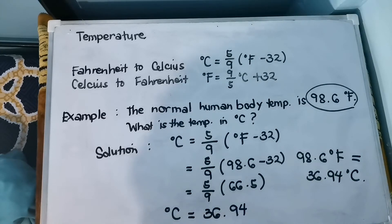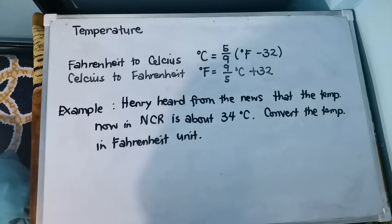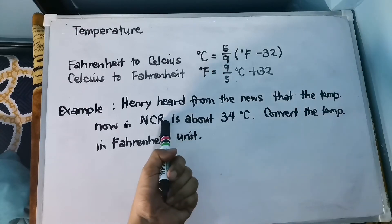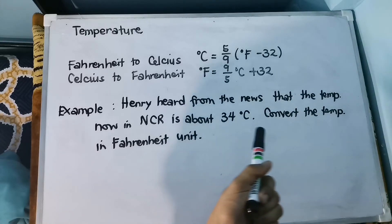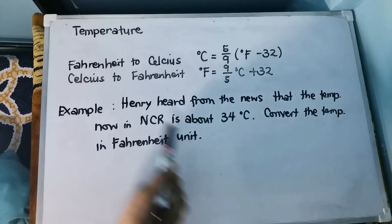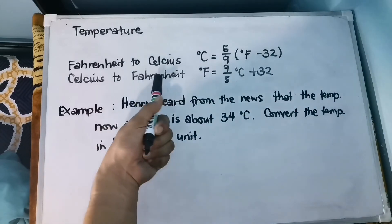That's how we convert Fahrenheit to Celsius. For our next example: Henry heard from the news that the temperature in NCR is about 34 degrees Celsius. We are going to convert that temperature to Fahrenheit units. Our given is 34 degrees Celsius, which we need to convert into Fahrenheit.